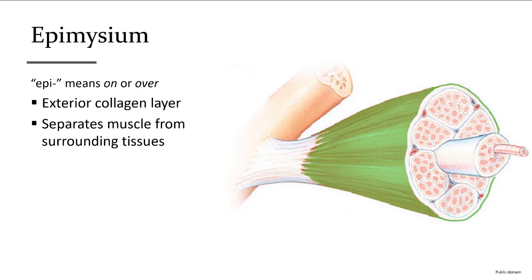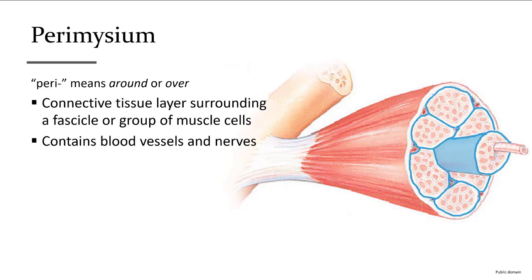Looking at a cross-section of muscle, you can see many bundles inside; however, the epimysium is only on the outer surface. The whole muscle is made up of many groups or bundles of individual muscle cells. The next connective tissue layer, the perimysium, wraps these bundles and separates them from each other.